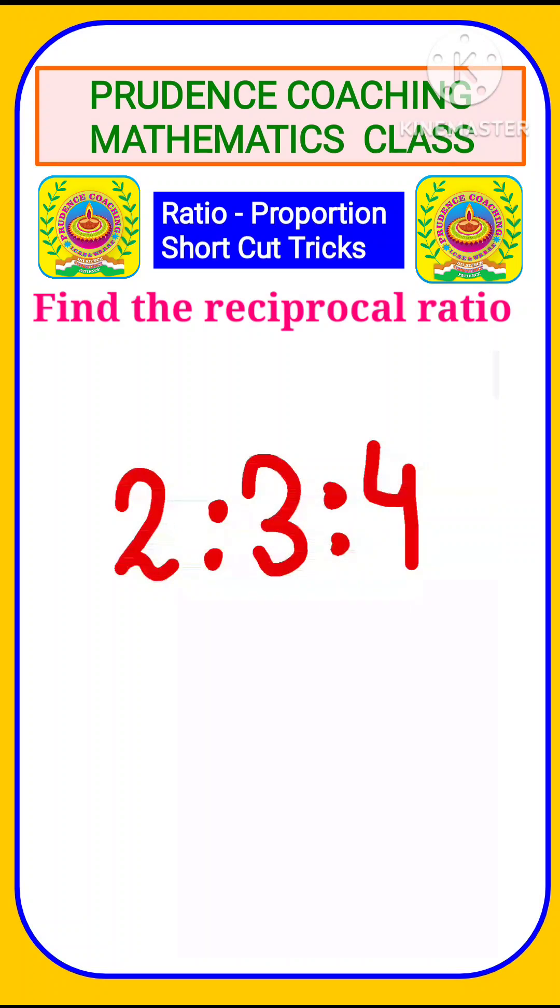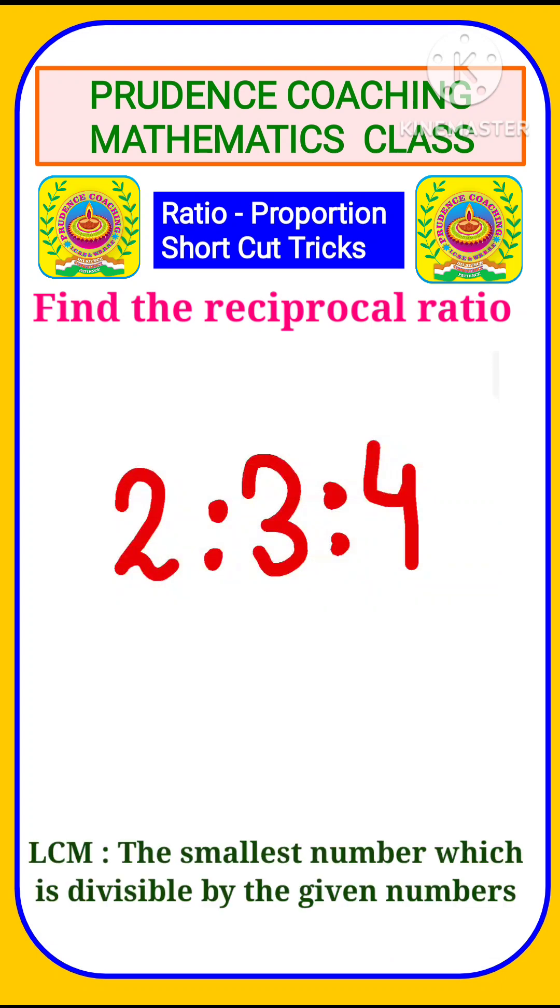So my dear students, here you are asked to find out the reciprocal ratio of 2:3:4. After the detailed method, I am going to give you the shortcut, so watch the video till the end. First, let us learn the method in detail. We have 2:3:4 and we're going to find out the reciprocal ratio.